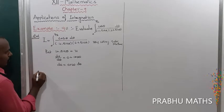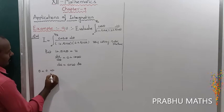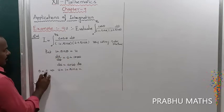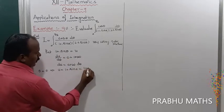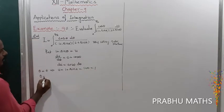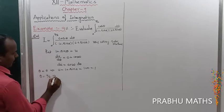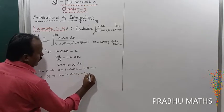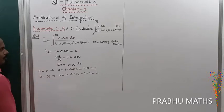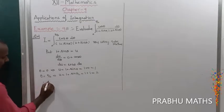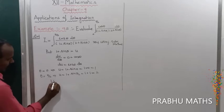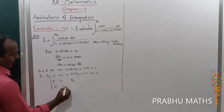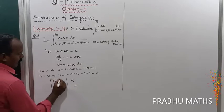Next, replace the limit values. When θ = 0, u = 1 + sin 0 = 1 + 0 = 1. When θ = π/2, u = 1 + sin(π/2) = 1 + 1 = 2. So the limits change from θ: 0 to π/2, to u: 1 to 2.